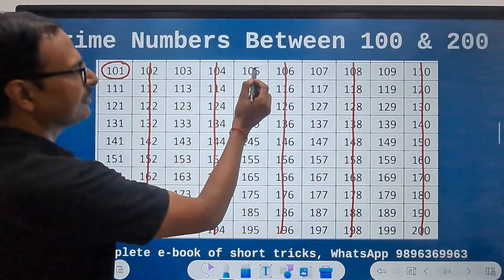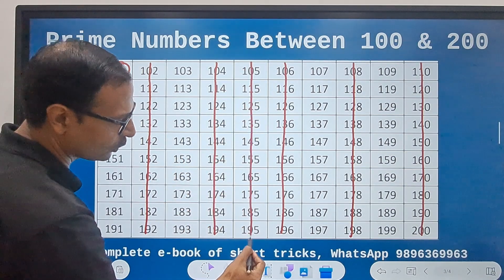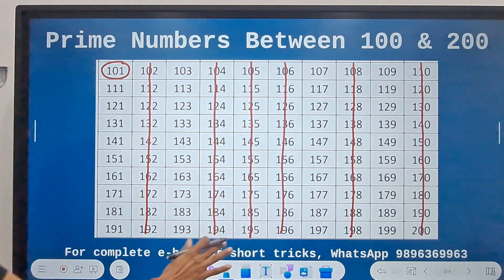Likewise, the one ending in 5 has to be divisible by 5. So this column is also ruled out since everything ends in 5.